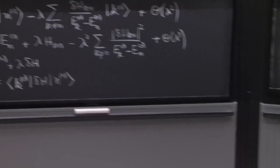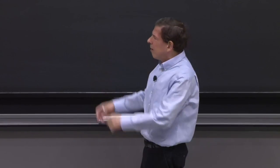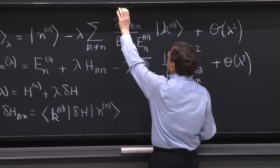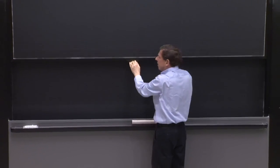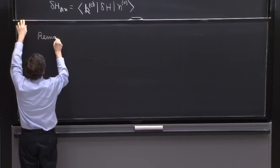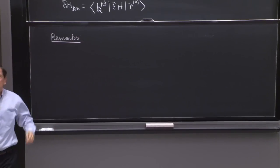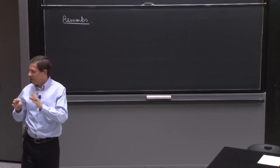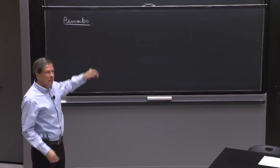Moreover, we have this symbol delta hkn that was defined to be the matrix element on the unperturbed eigenstates of the operator delta h. So that's another symbol in here. It's worth making a few remarks as to what we see from these formulas.